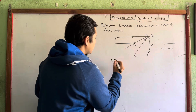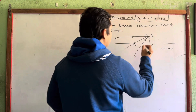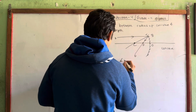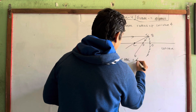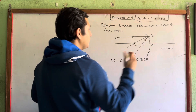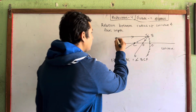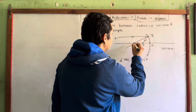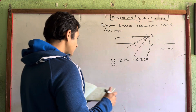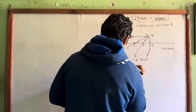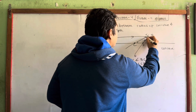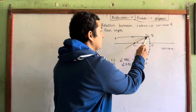We have to write one by one: angle ABC is equal to angle BCF. Okay, angle ABC is equal to angle CBF.